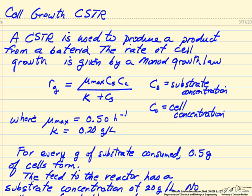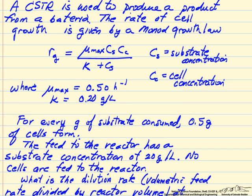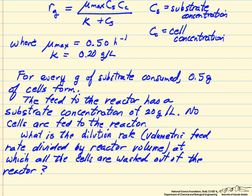We're given the two constants in this rate law and that for every gram of substrate consumed, 0.5 grams of cells form. The substrate coming in is at this high concentration, and no cells are fed to the reactor. Cell formation is autocatalytic, so as long as we initiate the reaction with some cells, we can make cells at steady state.